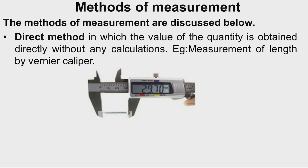The next topic is methods of measurement. Different kinds are used; we will discuss a few relevant to metrology. The first is the direct method, in which the physical quantity is obtained directly without any calculations. For example, measurement of length by Vernier caliper — we keep the workpiece between the moving jaw and measuring jaw, apply small pressure, and get the reading in the display. No calculation is needed; the measuring instrument directly displays the measured quantity, making it fast.